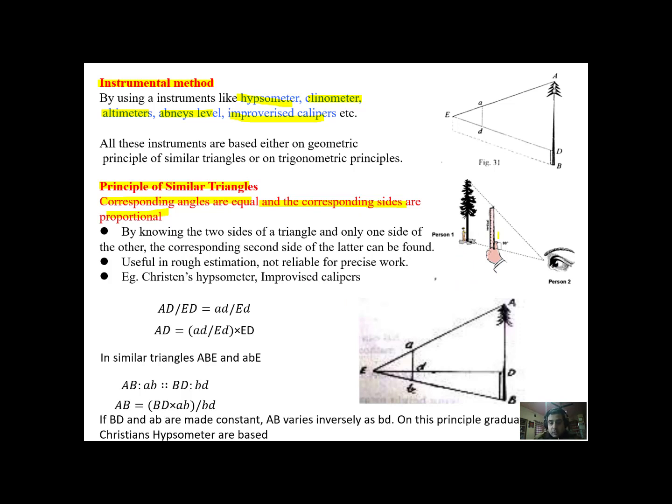We are holding a Christen's hypsometer. There is a person holding Christen's hypsometer in his hand and he is looking from the top of the Christen's hypsometer and coincides it with the tip of the tree. Now while holding this he is making it sure that the Christen's hypsometer is at a distance which is equal to the length of the portion of the Christen's hypsometer above his hand.